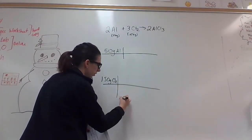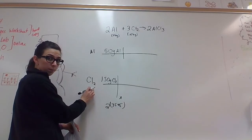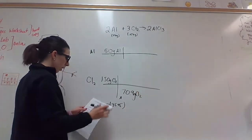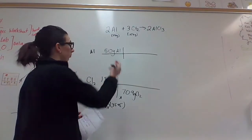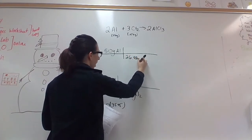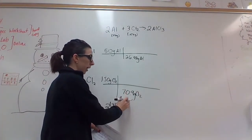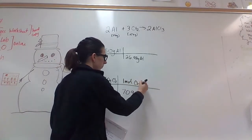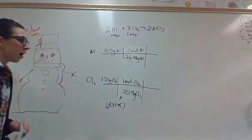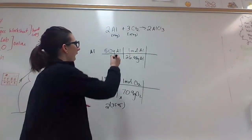The molar mass: chlorine is 35.45, times two because it's Cl2, giving us 70.9 grams of Cl2. For aluminum, there's only one aluminum with no subscript, so that's 26.98 grams of aluminum. These molar masses are equal to one mole each — one mole of aluminum and one mole of diatomic chlorine. Similar to when we canceled on the last one, I've canceled my grams, and now I need to get rid of moles of chlorine and turn this into moles of aluminum chloride.